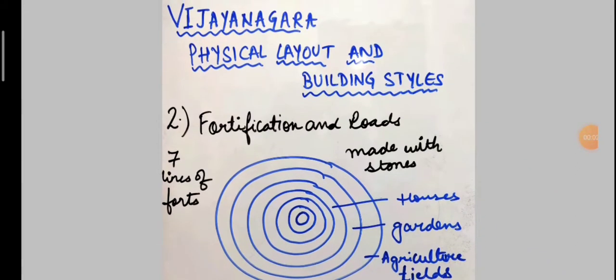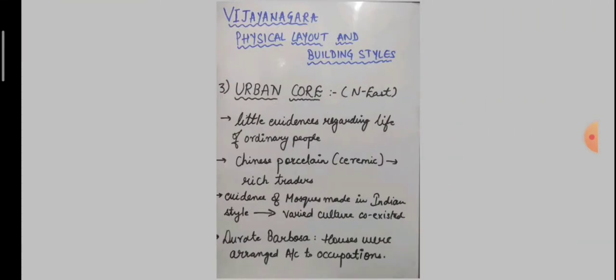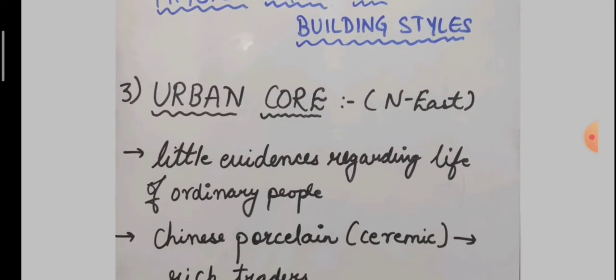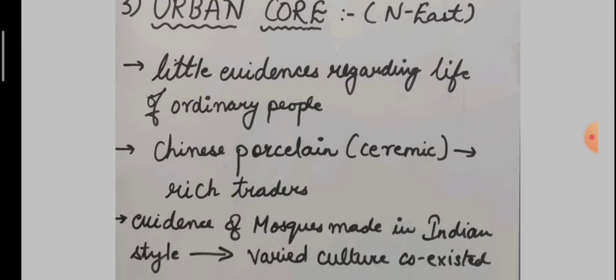About the water resources and the fortification in the Vijayanagara Empire, now further we are going into the details of the urban core. Moving along the roads leading into the urban core, there is relatively little archaeological evidence of the houses of ordinary people. Archaeologists have found fine Chinese porcelain in some areas, including